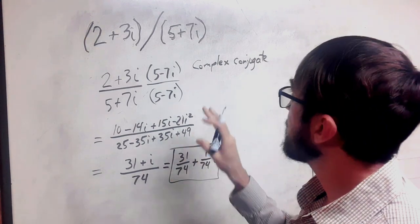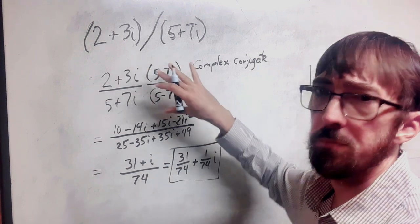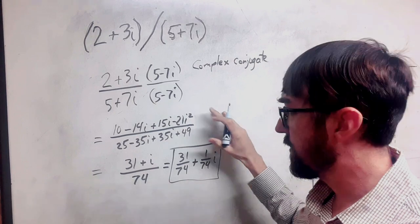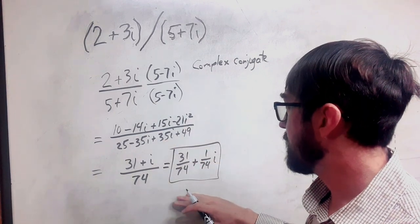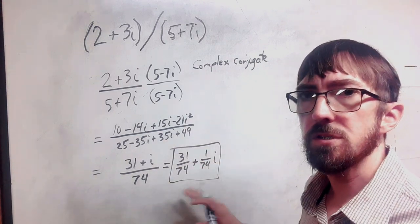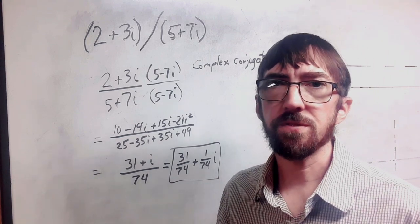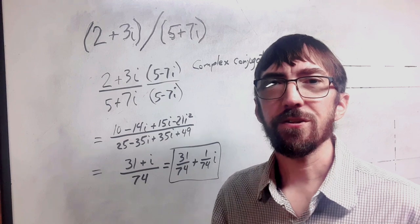So the extra step in the division part is doing the complex conjugate. Then we have the simplification that we go through and make sure that we have it in the final standard form for a complex number. Go ahead and try these problems that follow. Cheerful calculations.